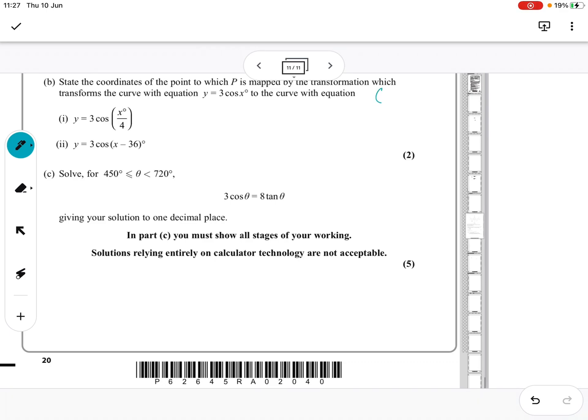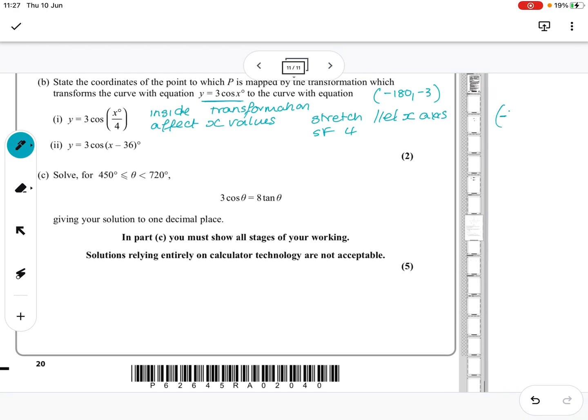So thinking back to that graph then, where our point cd is minus 180 minus 3, we're then adjusting this graph with that point to this way. So from the 3 cos x to 3 cos x over 4, we've had an inside transformation. So it will affect the x values. Because it's timesing or dividing, we know it's a stretch parallel to the x axis. Scale factor of 4 because it does the opposite of what you'll expect. So we're going to times our x value by 4, which gives us the new point being minus 720 and then minus 3.